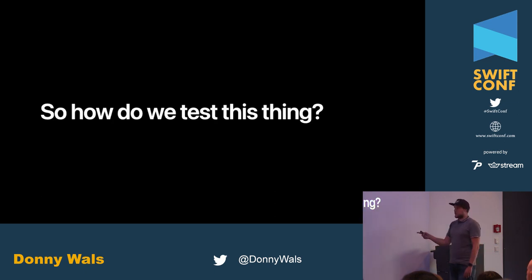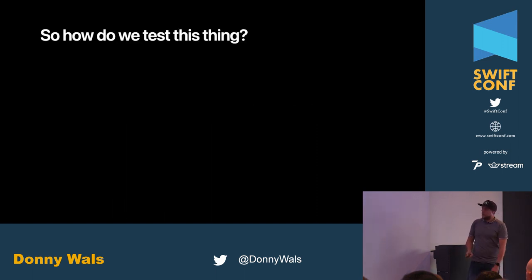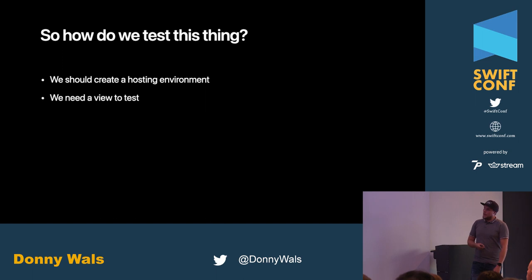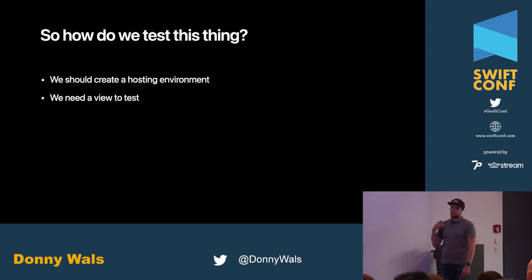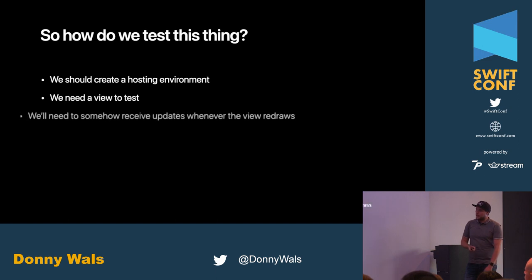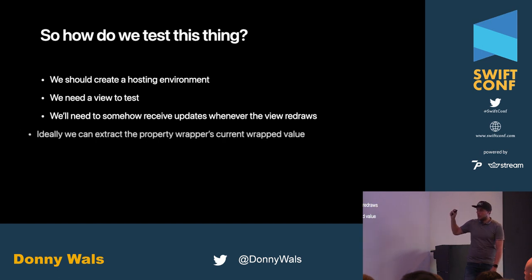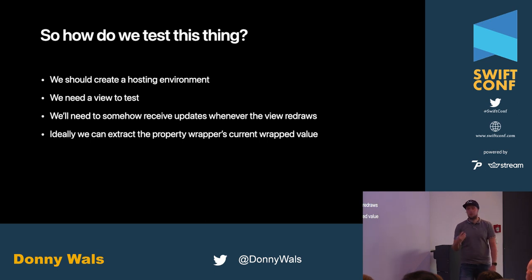Part two: how do we test this? It's really cool that we have this, but testing it is not trivial. To properly test it, we need somewhere to host our property wrapper — we need the SwiftUI environment. We can't just make an instance and start testing it. We need a view to test, we need to know whether the view receives updates correctly and triggers redraws correctly, and we need to be able to observe updates when the view redraws.